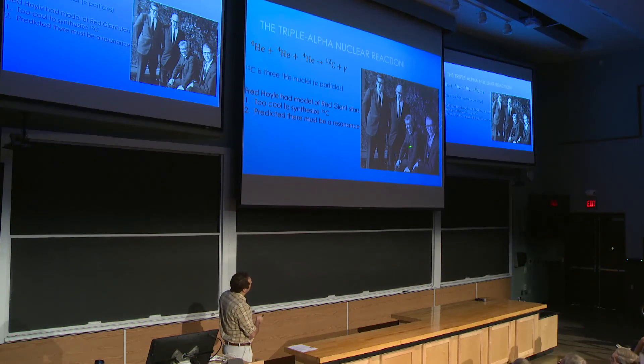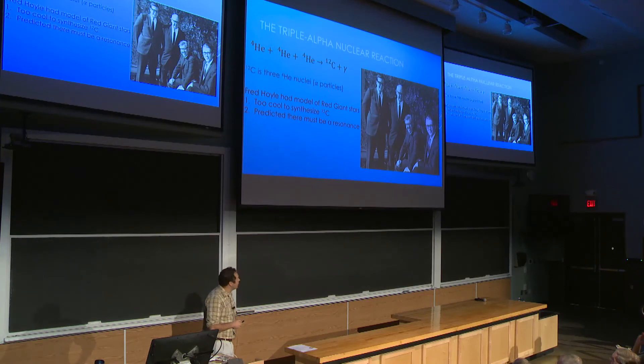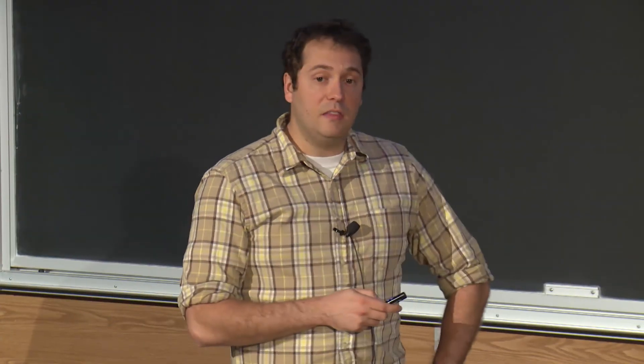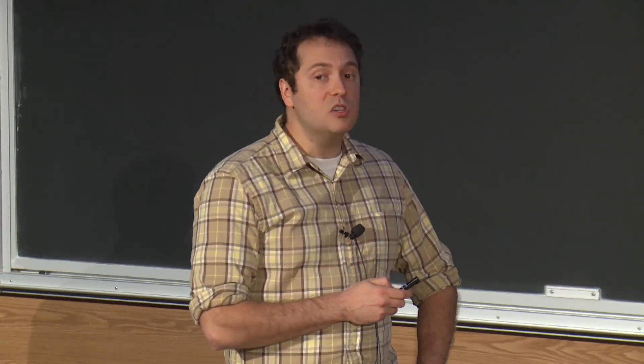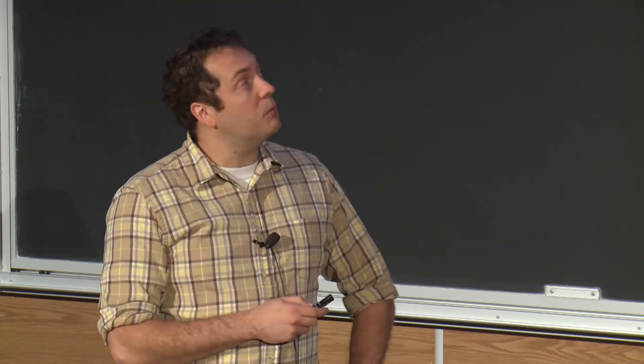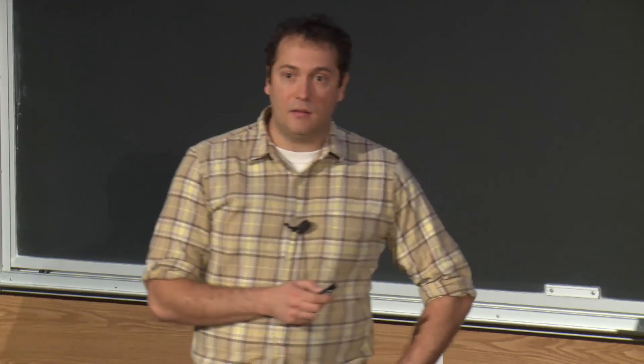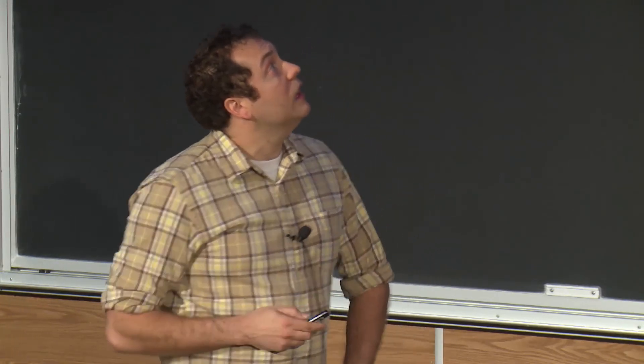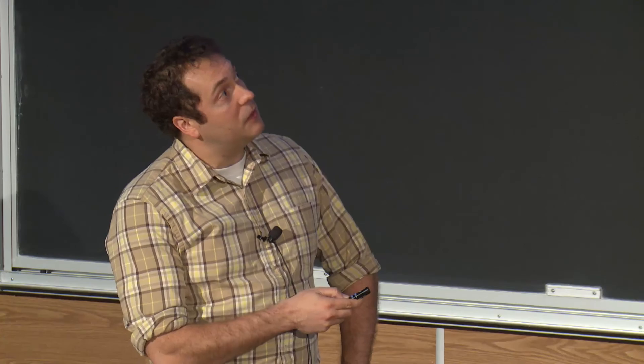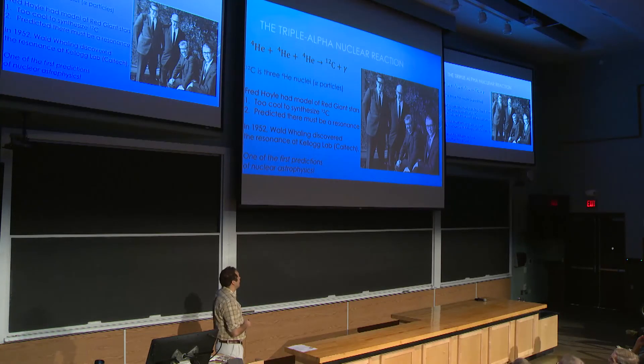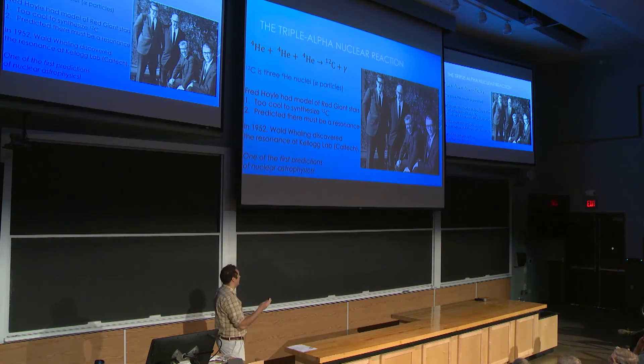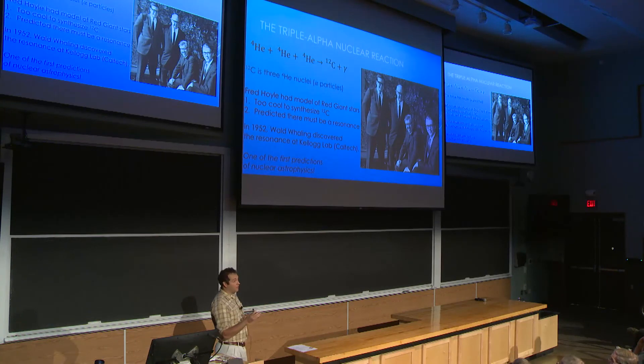So again, the triple alpha reaction, are these three helium nuclei that come together to form a carbon-12 nucleus. Helium nuclei are also called alpha particles. That's why it's called the triple alpha. Now in the early 50s, Fred Hoyle, who is this gentleman second from the left sitting, he had a model for red giant stars in our universe. And when he, he was a very adept astronomer. And so when he looked at these stars, he realized that in his model, they were much too cool to be able to burn helium into carbon-12 in the cores of their stars. So he predicted that there had to be a resonance in this reaction here.